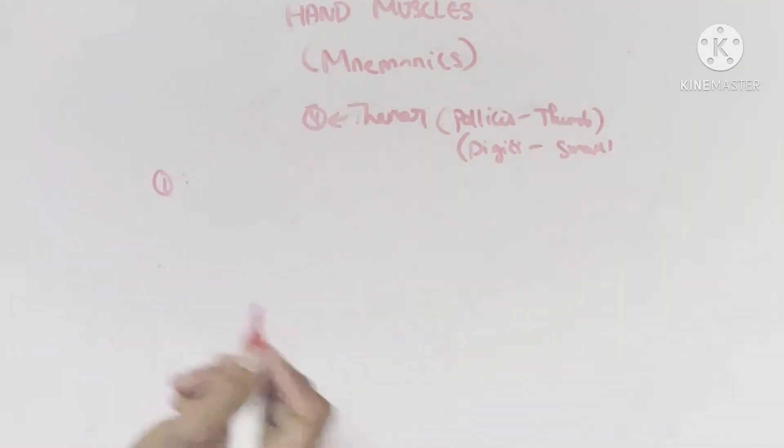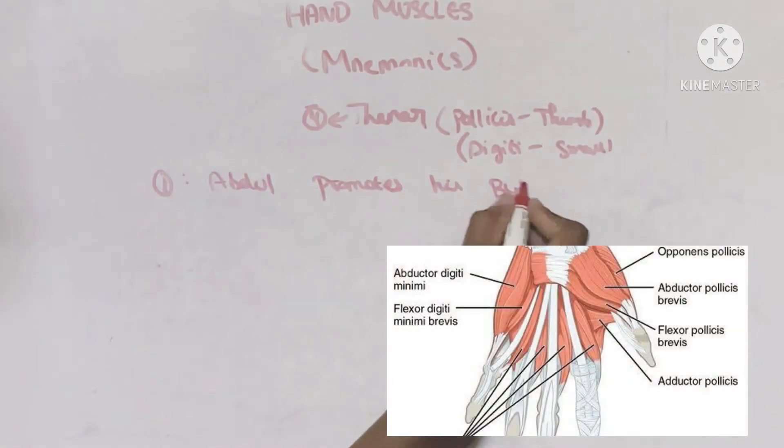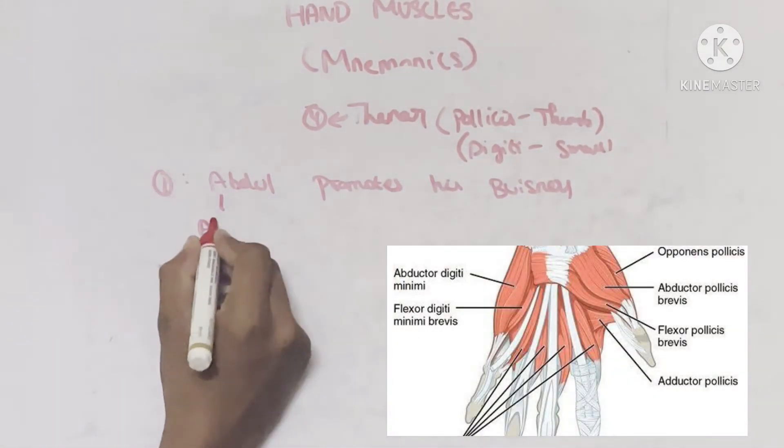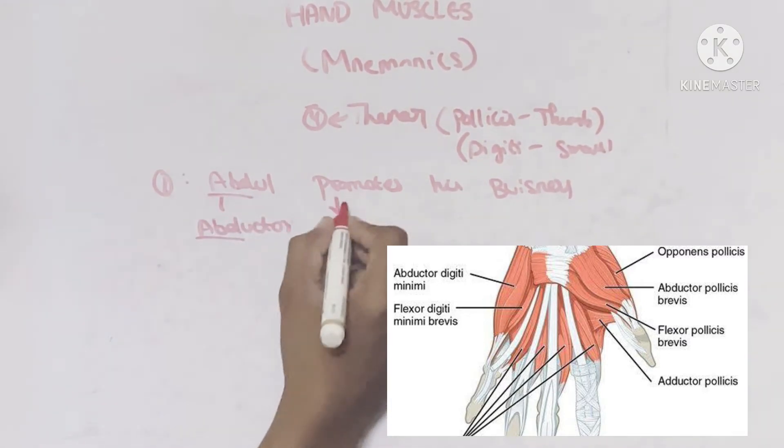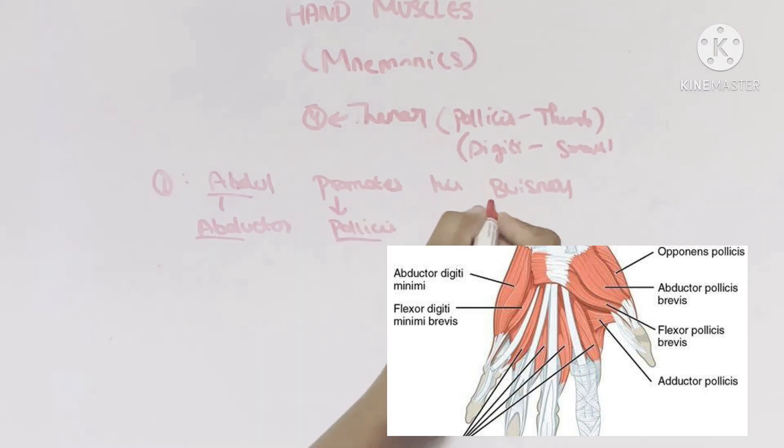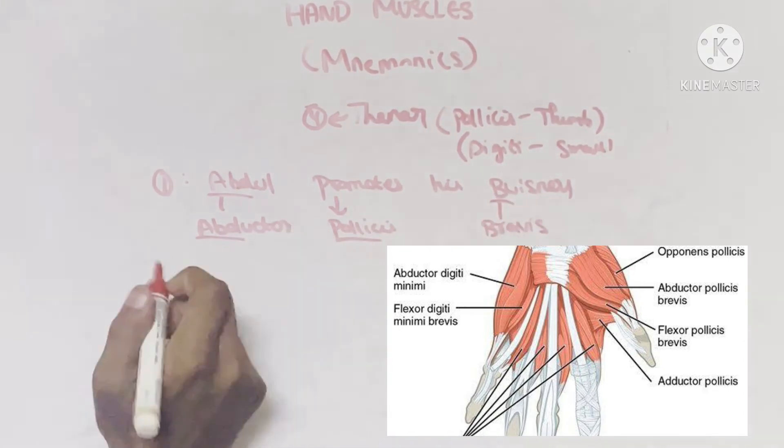For the first muscle, just remember this sentence: 'Abdul promote his business.' In this, A stands for abductor—like Abdul, abductor. P stands for pollicis. B stands for brevis. So this is one muscle.